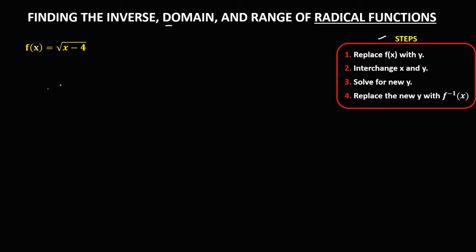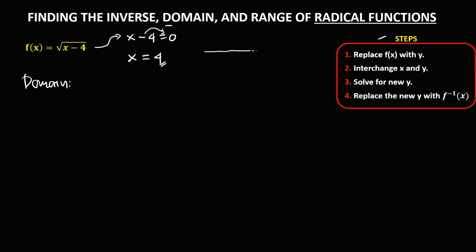First, we need to find the domain. To solve for the domain of this radical function, we just need to equate the expression inside the radical to 0. So we have x minus 4 equals 0. To solve for x, transpose the negative 4, so x is equal to positive 4. Then place this number on a number line — this one is 4.